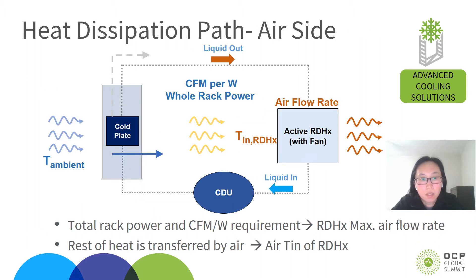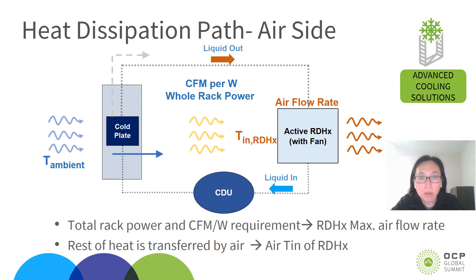At the air side, the cold air from the data center goes through the rack and each of the chassis, carrying some of the heat from the other components cooled by air directly. The preheated air then goes through the rear-door heat exchanger to cool the coolant, becomes even warmer, and is exhausted to the hot air side of the data center. The total CFM going through the rear-door heat exchanger is controlled at the rack level, based on the CFM per watt requirement.